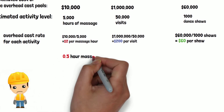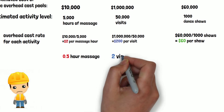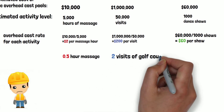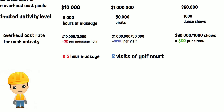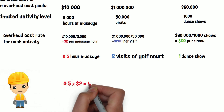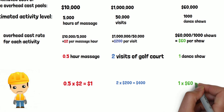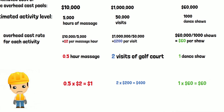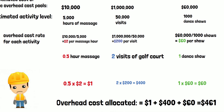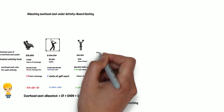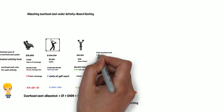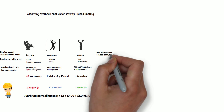Suppose to make this guy, little George, happy, he needed half an hour massage, two visits of golf cart, and watch one dance show. So let's take a look at the calculation. Half an hour — one hour is $2 — so that's $1. Two visits, that's $40 for the golf cart, and the one dance show is $60. When we add them together, the total cost is $461. That's how much is allocated to little George as the overhead cost.